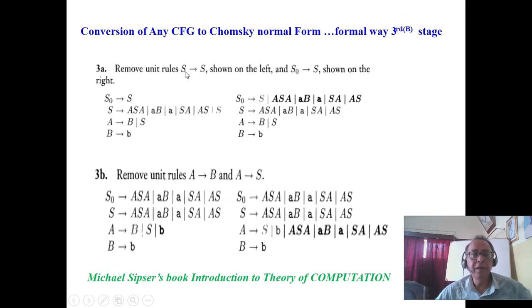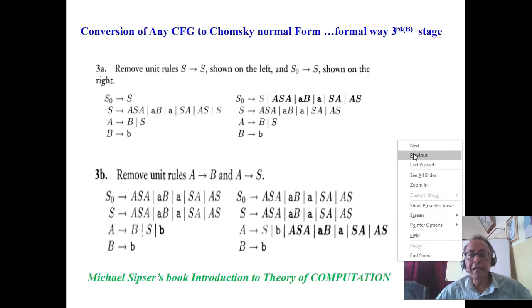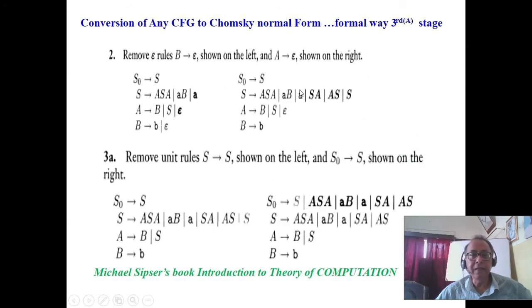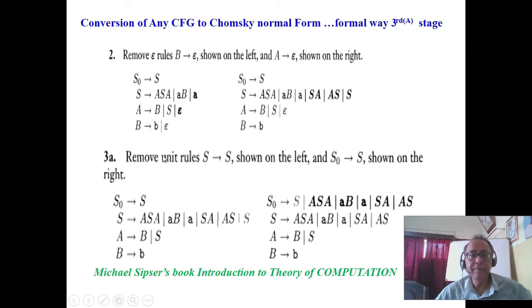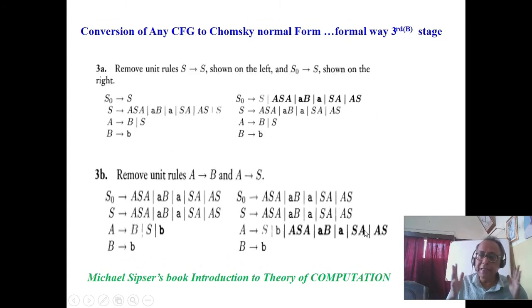Now remove single-variable rules. We initially start with S. Whenever you see S to S — look up, S comes from S — remove S to S. These detailed steps will be given and you will understand very easily.